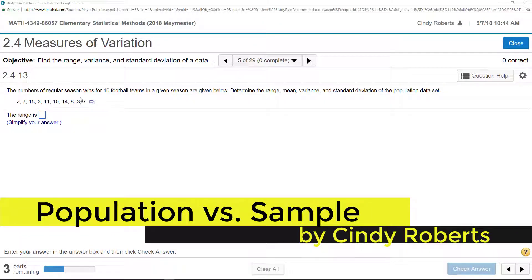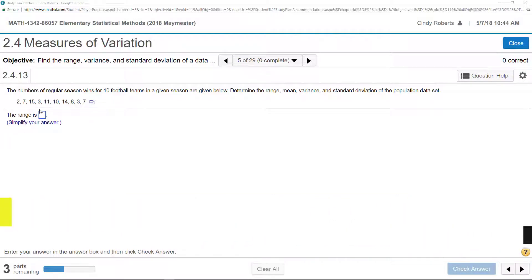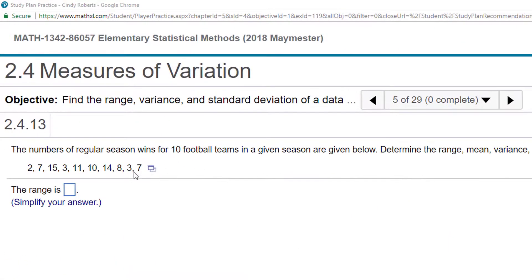Alright, so we have the number of regular season wins for 10 football teams, and we want to find the range, where the range is just the largest value, which looks to be 15, minus the smallest value, so 15 minus 2. Excellent!